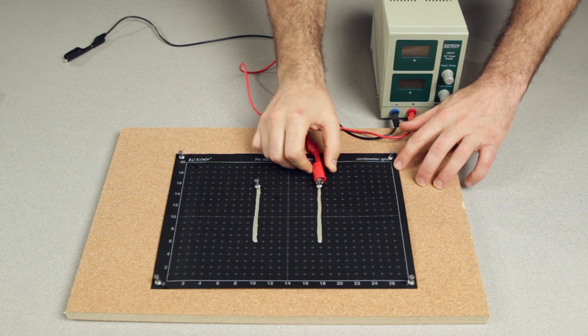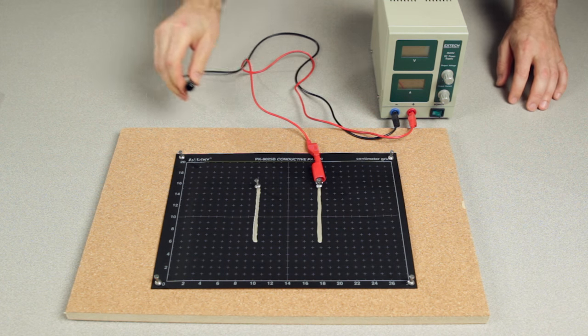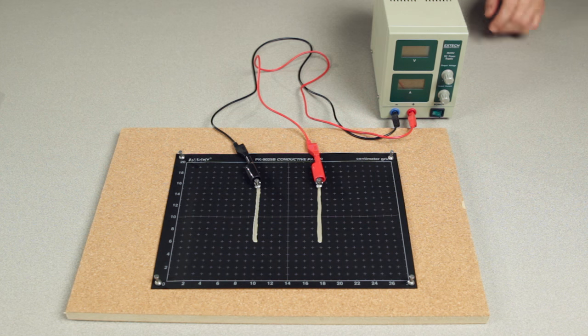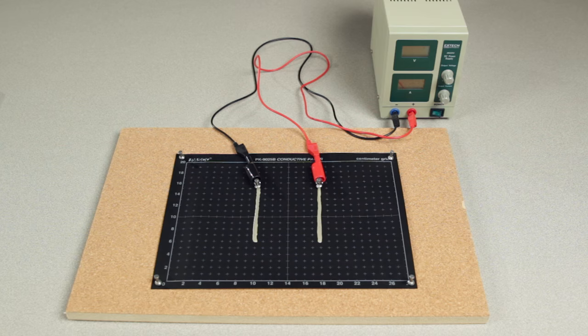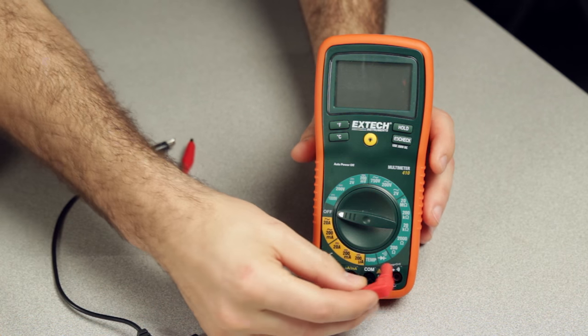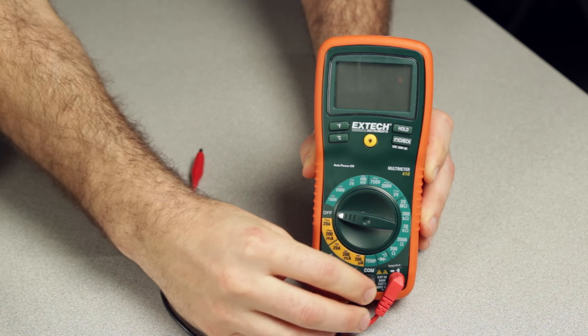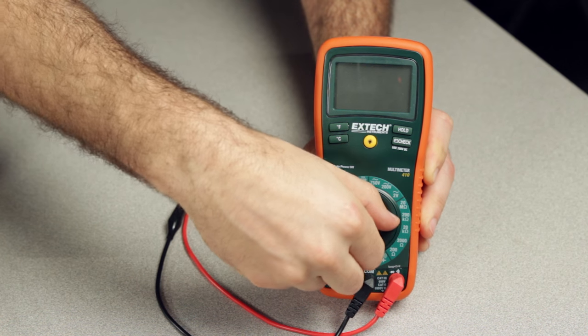Use patch cords and alligator clips to connect the positive and negative terminals on a power supply to the pushpins in the electrodes, positive to one electrode and negative to the other. Connect patch cords and alligator clips to both terminals on a voltmeter, and then clip the voltmeter's ground terminal to the negative electrode.